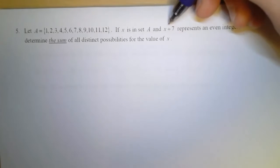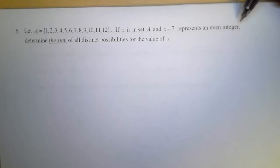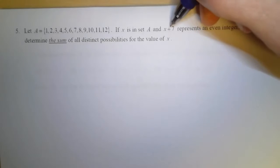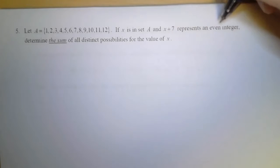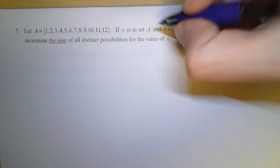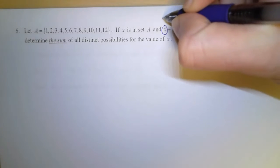But it also tells us that x plus 7 represents an even integer. Now that's key right there, because what are we doing? Whatever x is, we add 7 and we get an even integer. So if we're adding an odd, then that means this has to be an odd.